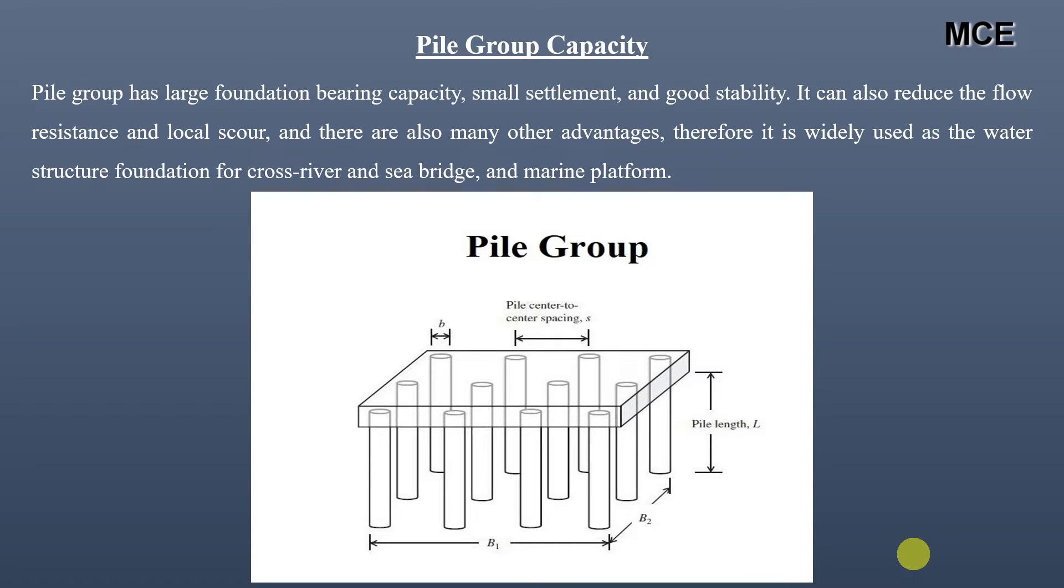Sometimes instead of providing a single pile for the foundation, we provide a pile group. This helps us provide large foundation bearing capacity, reduce settlement, and provide good stability to the structure. It also reduces flow resistance and local scour, which are very common in sea structures. There are many other advantages, so pile groups are widely used as foundations for water structures such as cross-river and sea bridges.